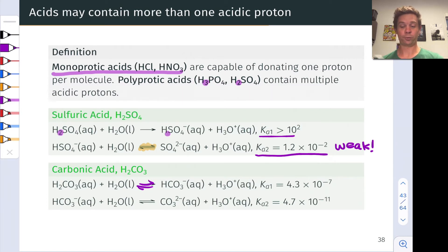Ka1 is 4.3 times 10 to the negative 7. Notice that the second deprotonation of HCO3 minus, Ka2 is quite a bit smaller than Ka1, way down at 4.7 times 10 to the negative 11 power.